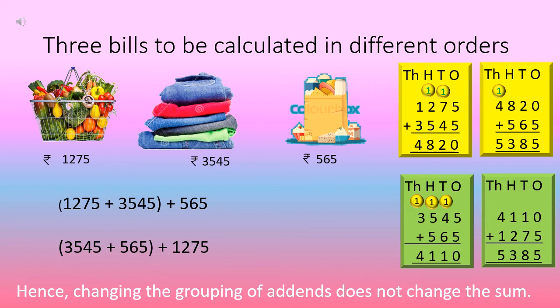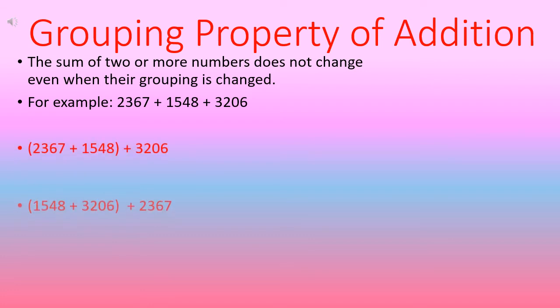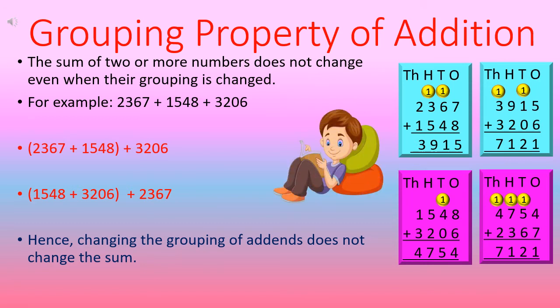Hence, we can see that changing the grouping of addends does not change the sum. Here the addends are 1,275; 3,545; and 565. Both of them added these three addends in different groupings but still got the same answer. This explains the grouping property of addition, which says the sum of two or more numbers does not change even when their grouping is changed.